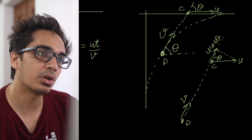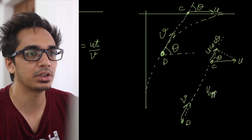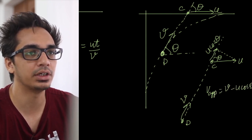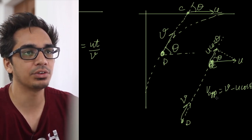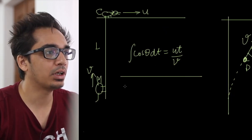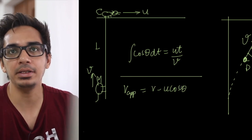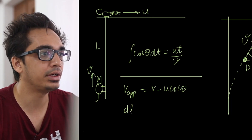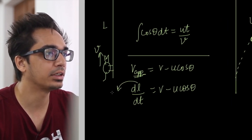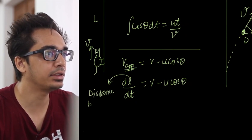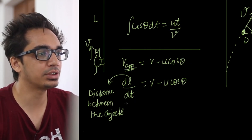Dog v से approach कर रहा है और cat इस line के along u cos theta से भाग रही है। तो velocity of approach = v − u cos theta। Velocity of approach को dl/dt लिख सकते हैं जहाँ l distance between the objects है। इसलिए dl/dt = v − u cos theta।